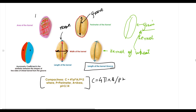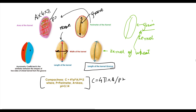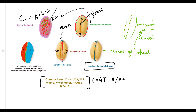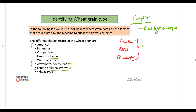So we take the area A, multiply it by 4 and π, and divide it by the perimeter squared (P²), and that gives us the compactness. So we have looked at six parameters: the area, the perimeter, the length of the kernel, the width of the kernel, the length of the kernel groove, and the compactness.